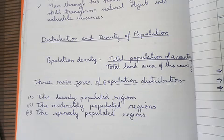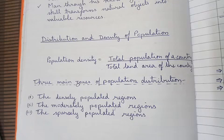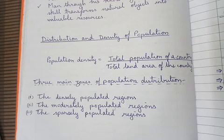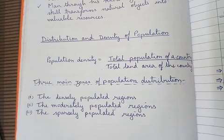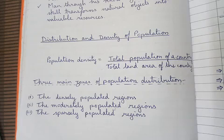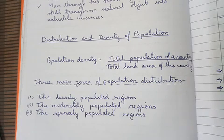What happened was they started finding new land. This was the time when North America, South America, the southern part of Africa, Australia, and New Zealand — all these new lands and continents were discovered. A large number of people from Europe migrated to these continents like North America, South America, and Australia.